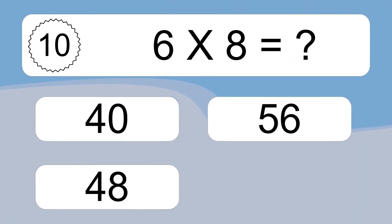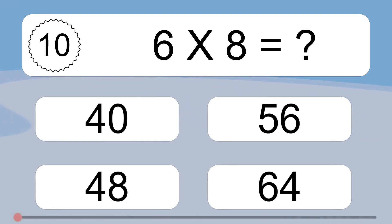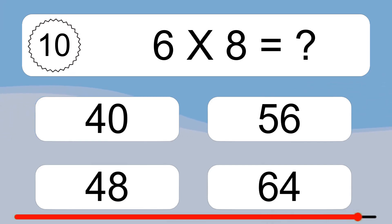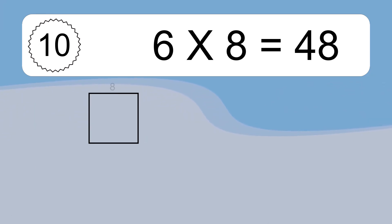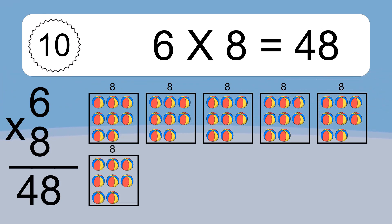6 times 8 equals what? We have 6 boxes, and each box has 8 colorful balls inside. If you count all the balls in all the boxes together, you will have 6 times 8 balls. This equals 48 balls.